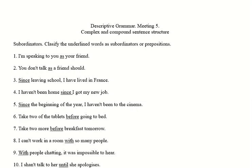In the second example, 'you don't talk as a friend should,' we've clearly got 'a friend should' — a subject and a verb. Because of the sentence structure, this 'should' is only half of the understood verb form: 'you don't talk as a friend should talk.' So we've got a subject, we've got a verb form, we've clearly got a separate clause. So 'as' in this sense is working as a subordinator — it's linking two clauses.